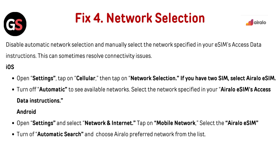Network selection: disable automatic network selection and manually select the network specified in your eSIM's access data instructions — this can sometimes resolve connectivity issues. For iOS: open Settings, tap on Cellular, then tap on Network Selection. If you have two SIMs, select the earlobe SIM. Turn off Automatic, then select the network specified in your earlobe SIM's access data instructions.